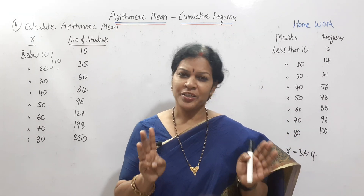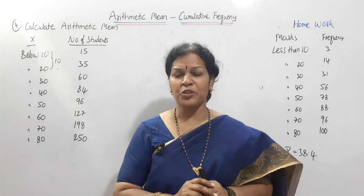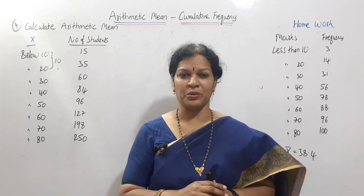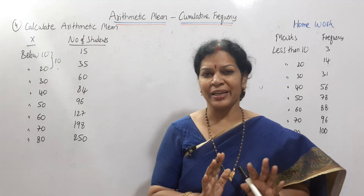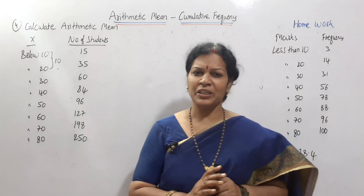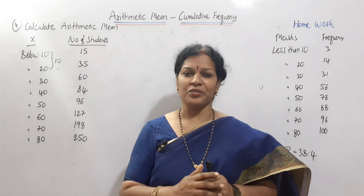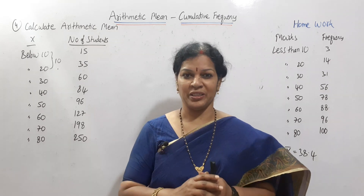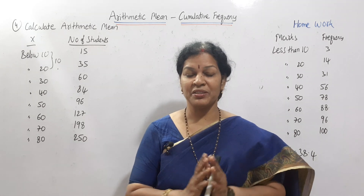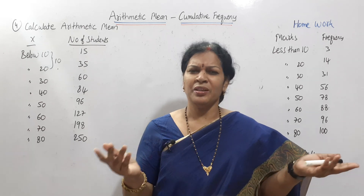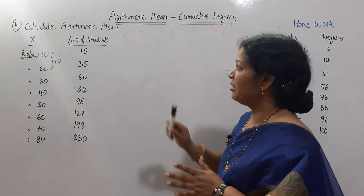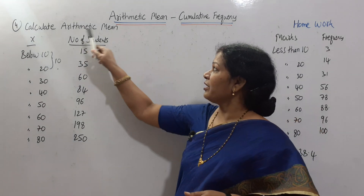In the continuous series, there is a cumulative frequency method. That method is a standard method. This is the class interval, and the frequency is also in ascending order. That is why we can rearrange — the class interval will be arranged. That is a simple problem. Now let's calculate the arithmetic mean.